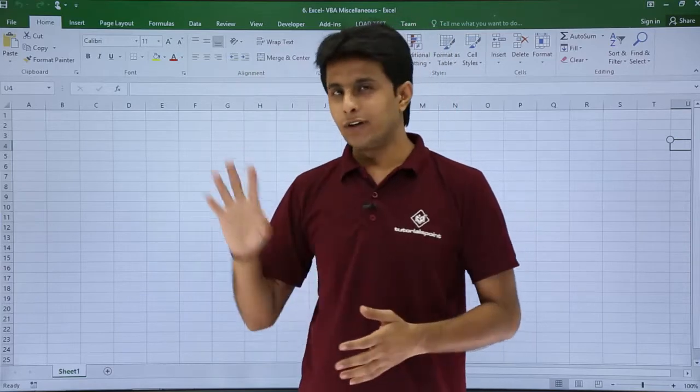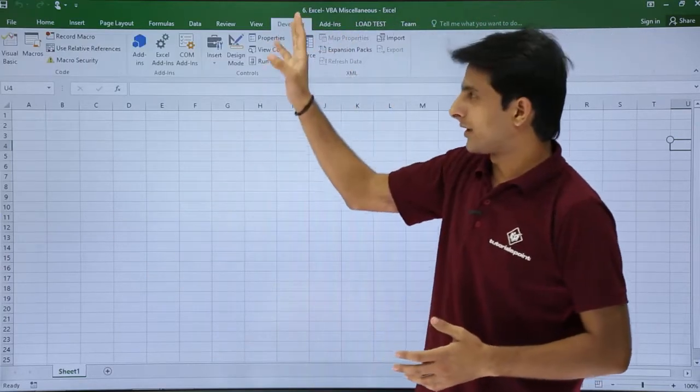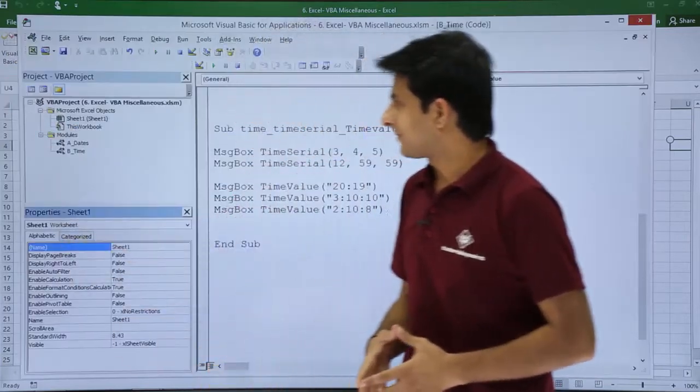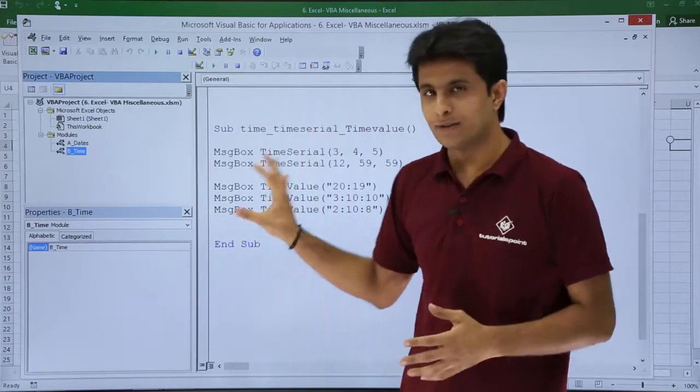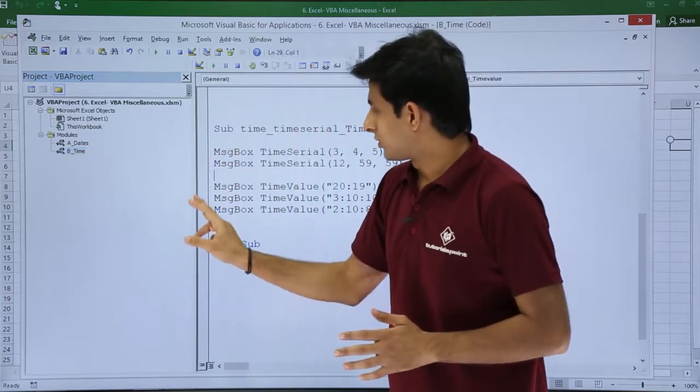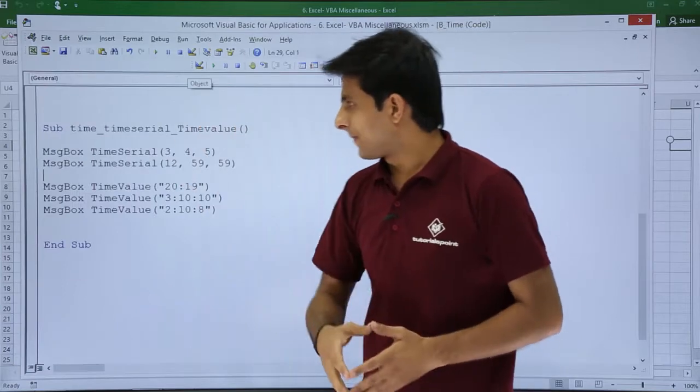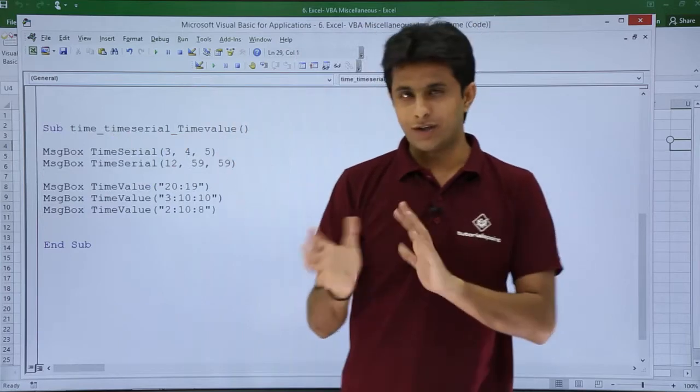Let's see. I've already written a code, a macro at the backend. I'll open it, go to Developer, click on Visual Basic, and if you see in the b_time module, I've written some code here. That's a sub procedure. I'll close this so I get enough space to show you.